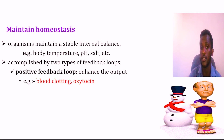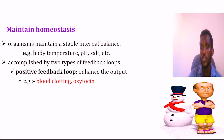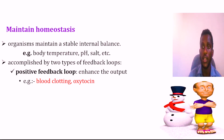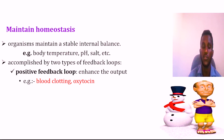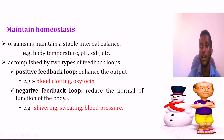Once body temperature changes, the organism manifests responses to restore it. Blood clotting is a response involving platelets. Oxytocin is a hormone that can cause blood-related responses. In the case of positive feedback, such as after birth, oxytocin promotes lactation. This is an example of positive feedback in homeostasis.